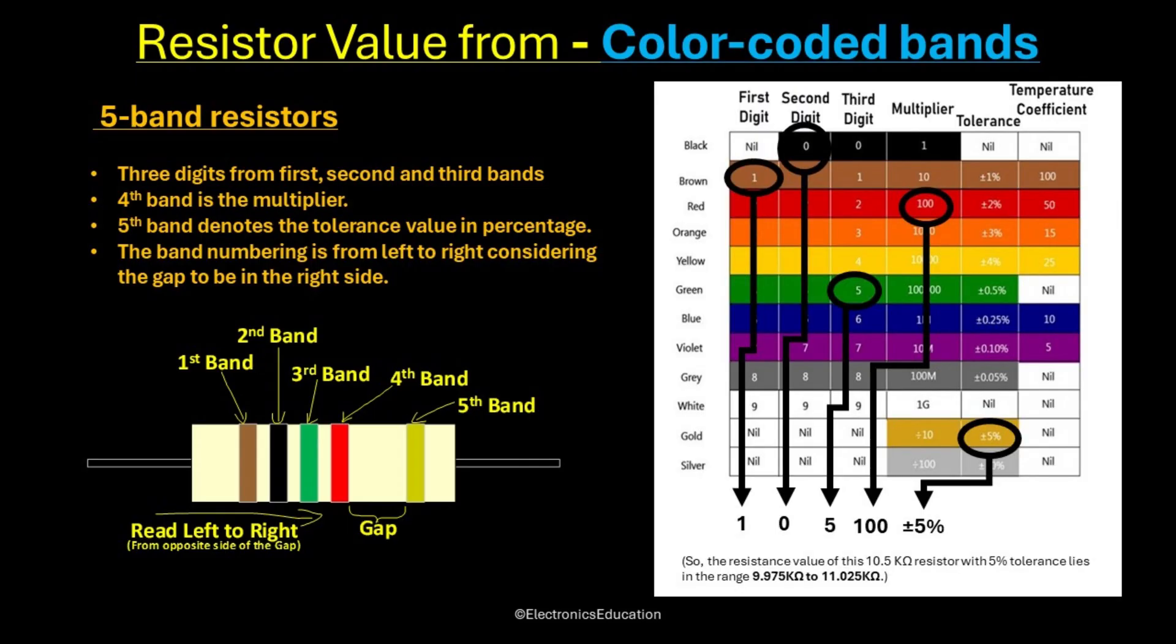So in this example, the bands are brown, black, green, red, and gold. Thus, the resistor value becomes 10.5 kiloohm with 5% tolerance.